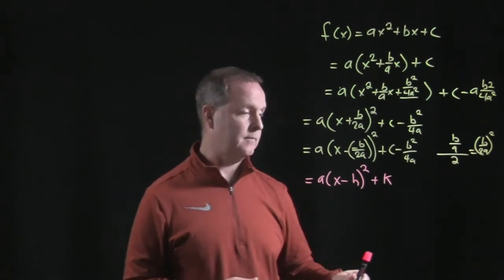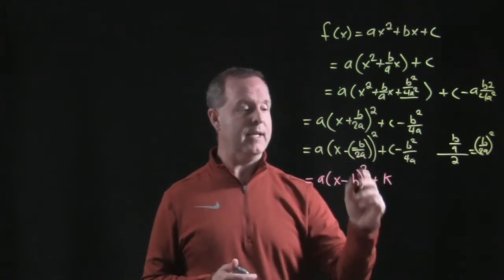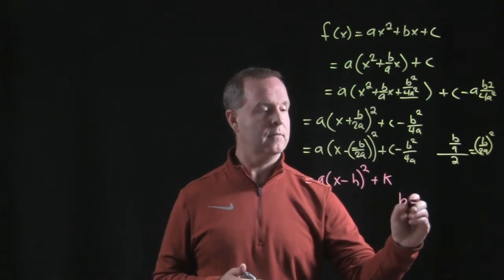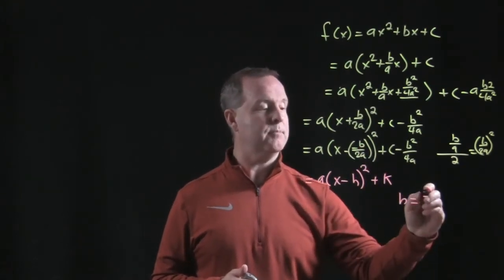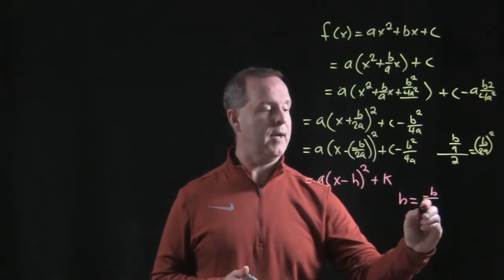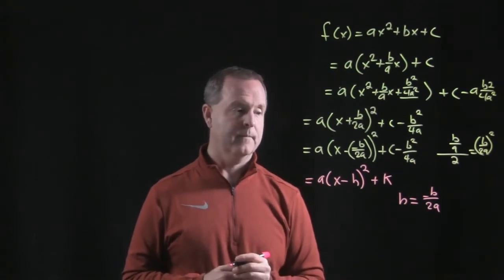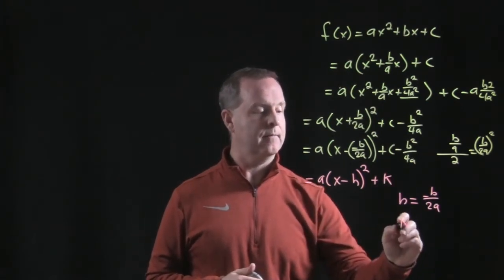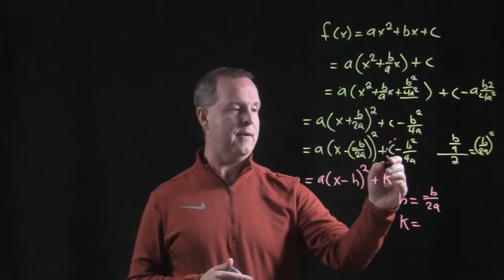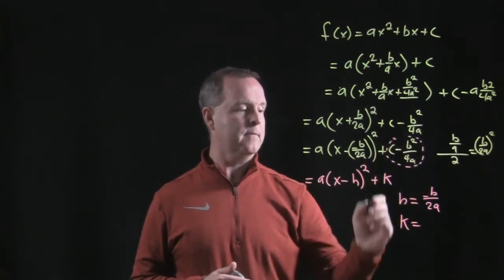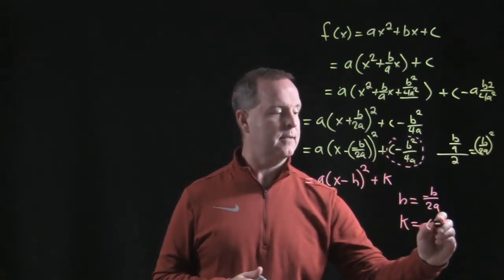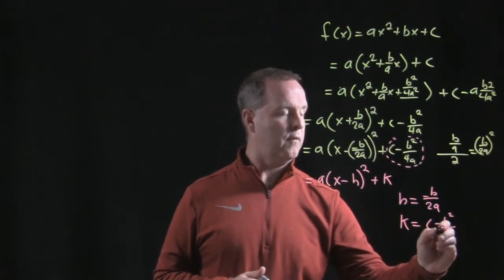Do you see the form that I have in there? So h equals the minus b over 2a, and then k represents all this stuff right here, which is c minus b squared over 4a.